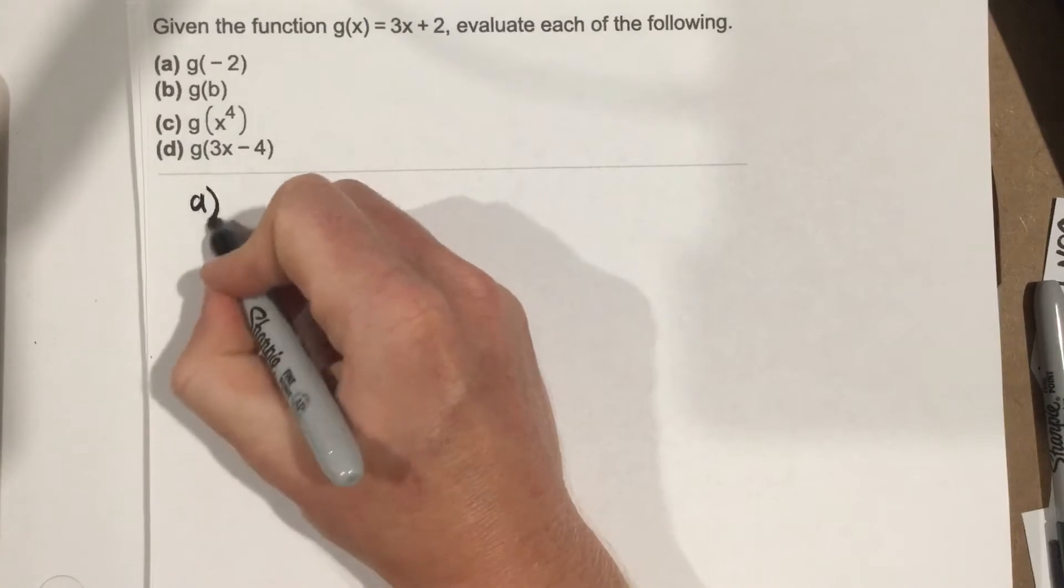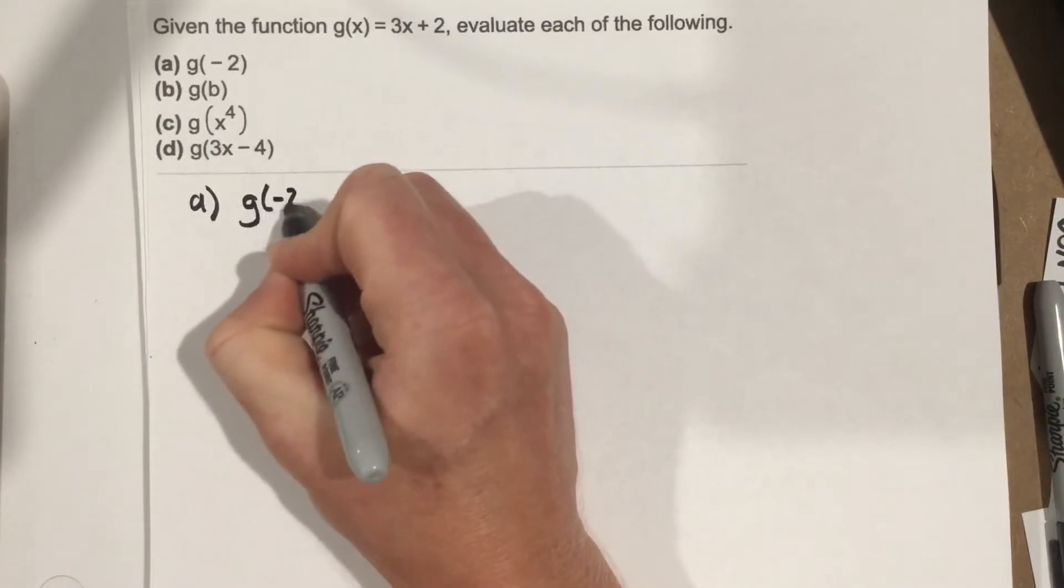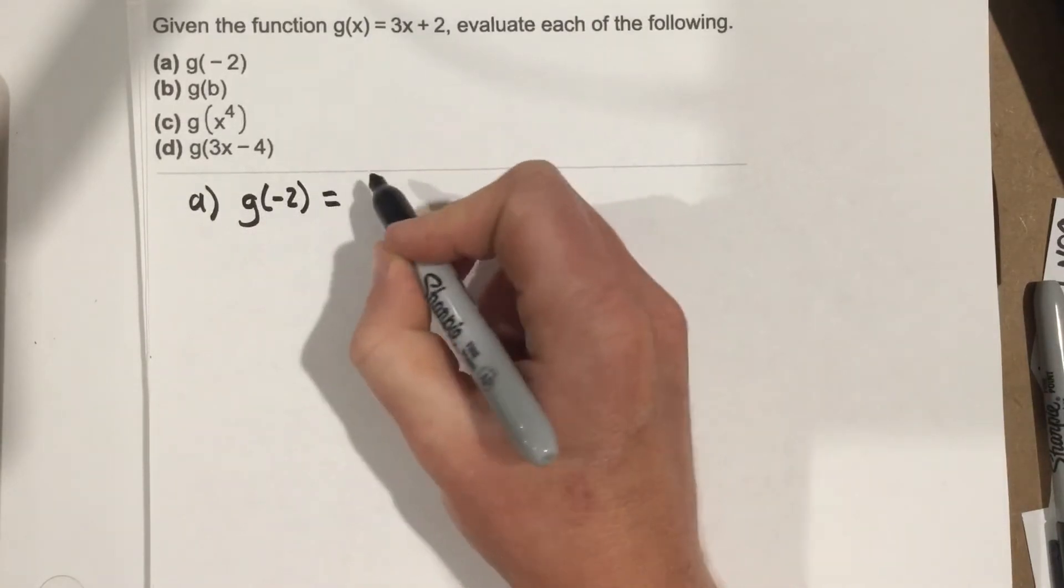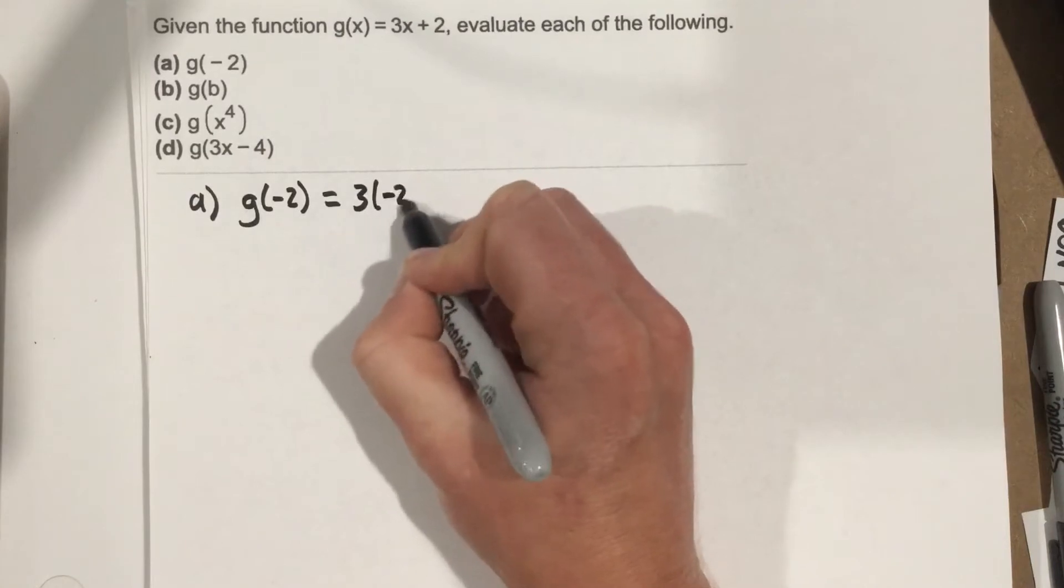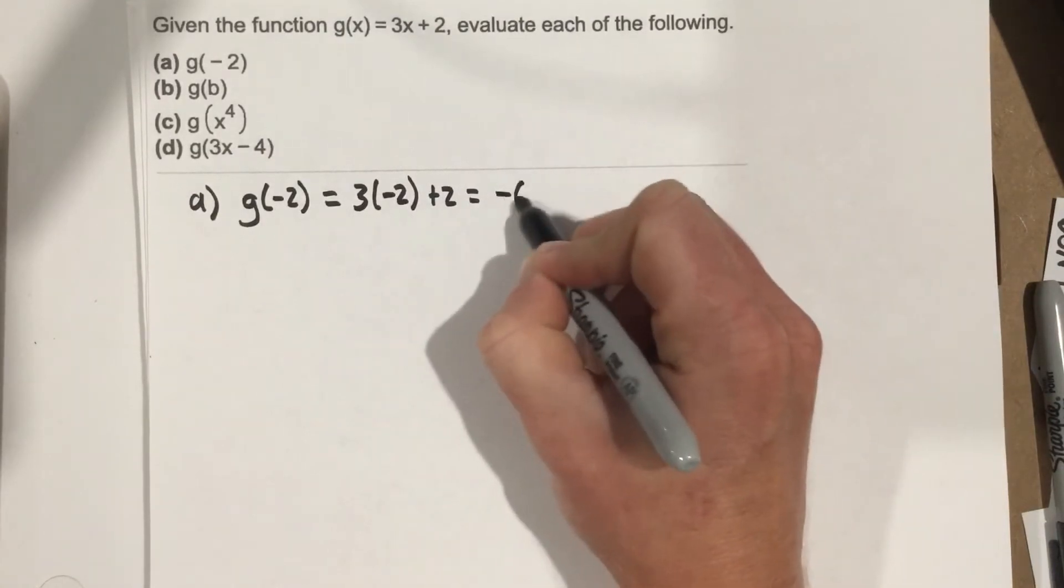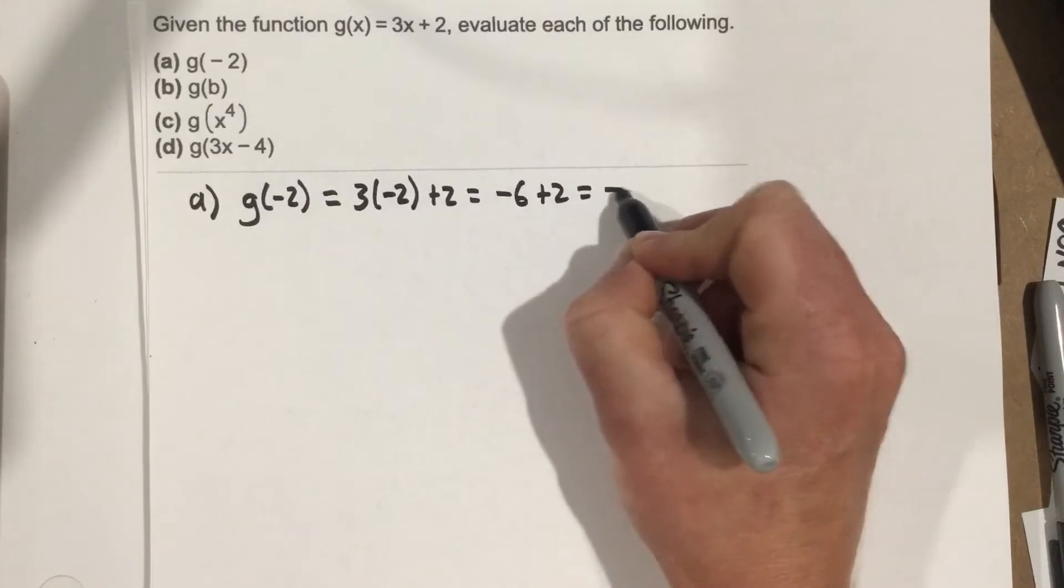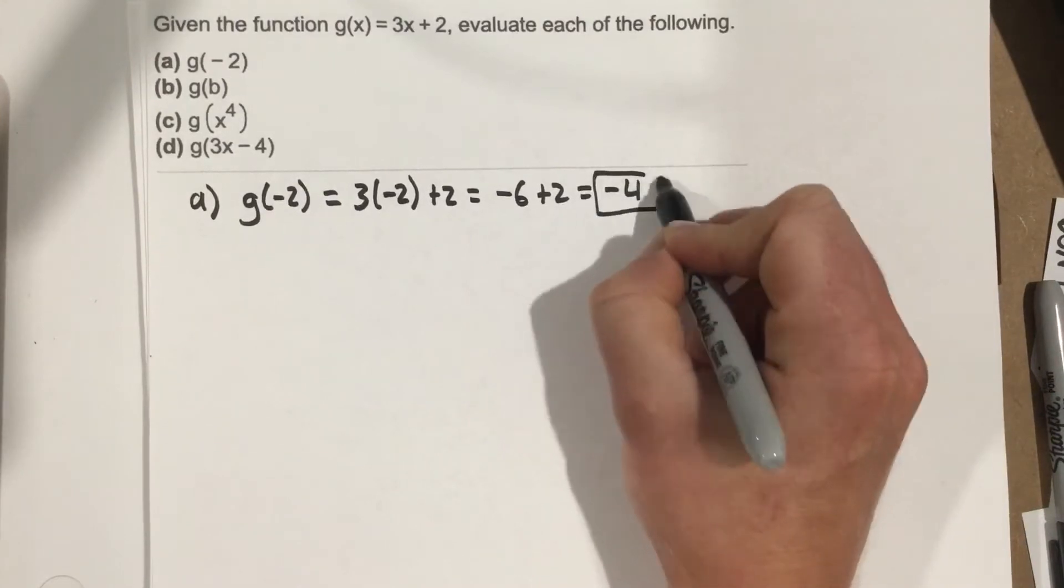Part A. They want us to evaluate g of negative 2. Well, that would be 3 times negative 2 plus 2, which is negative 6 plus 2, which is negative 4 for part A.